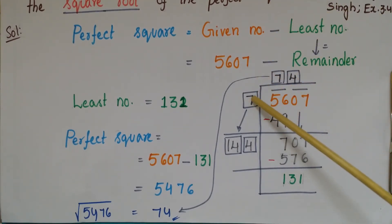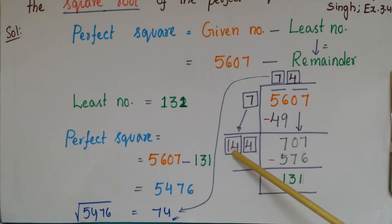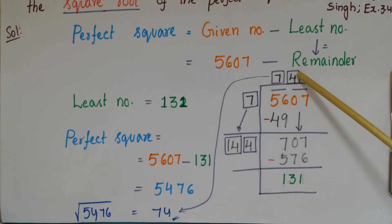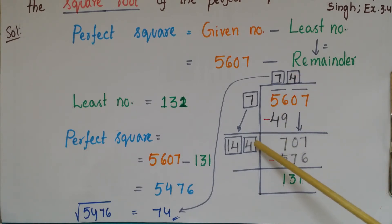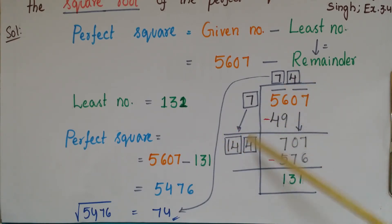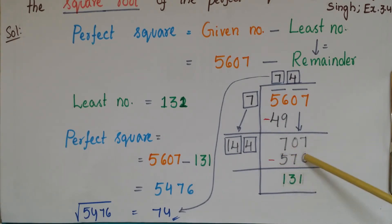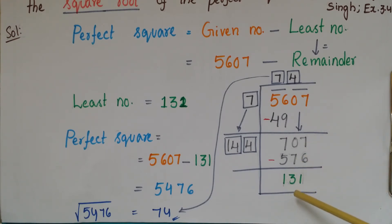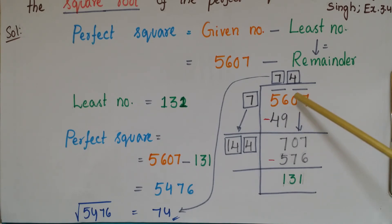Now double the divisor: two 7s are 14. Write 14 here and think of a digit to place next to it. Write the same digit in the quotient. This number multiplied by the full divisor should be less than or equal to 707. Write 4 here and in the quotient — multiply 4 by 144, which is 576. Subtract 576 from 707 to get a remainder of 131. Since the remainder is not 0, this is not a perfect square.